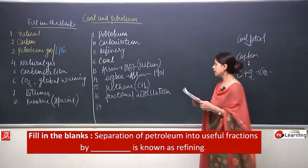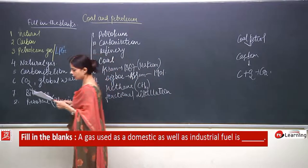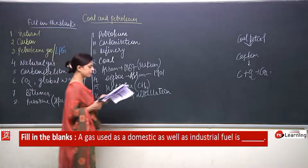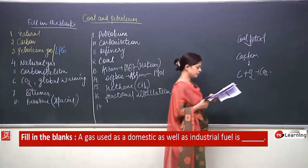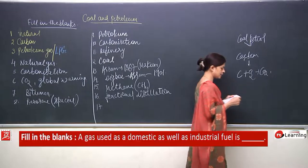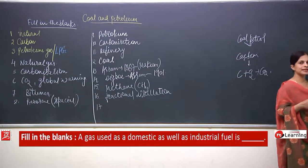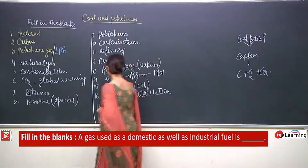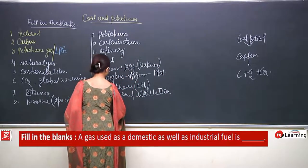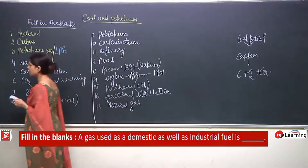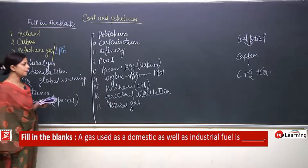Number 17: a gas used as a domestic as well as industrial fuel is dash. Natural gas can be used for domestic purposes as well as industrial purposes. So, the answer is natural gas.